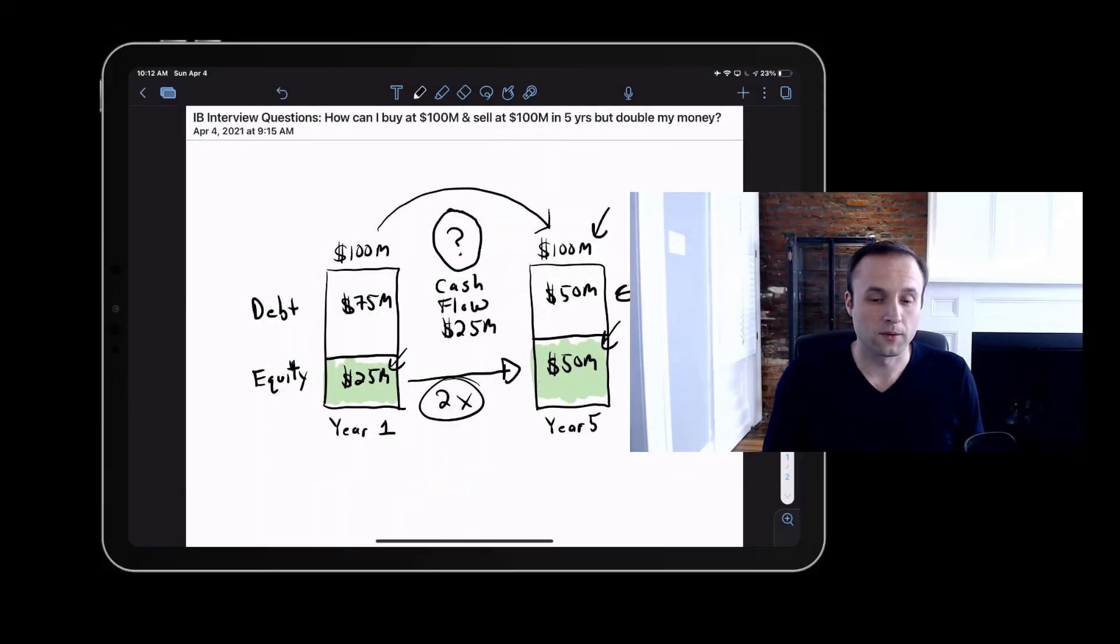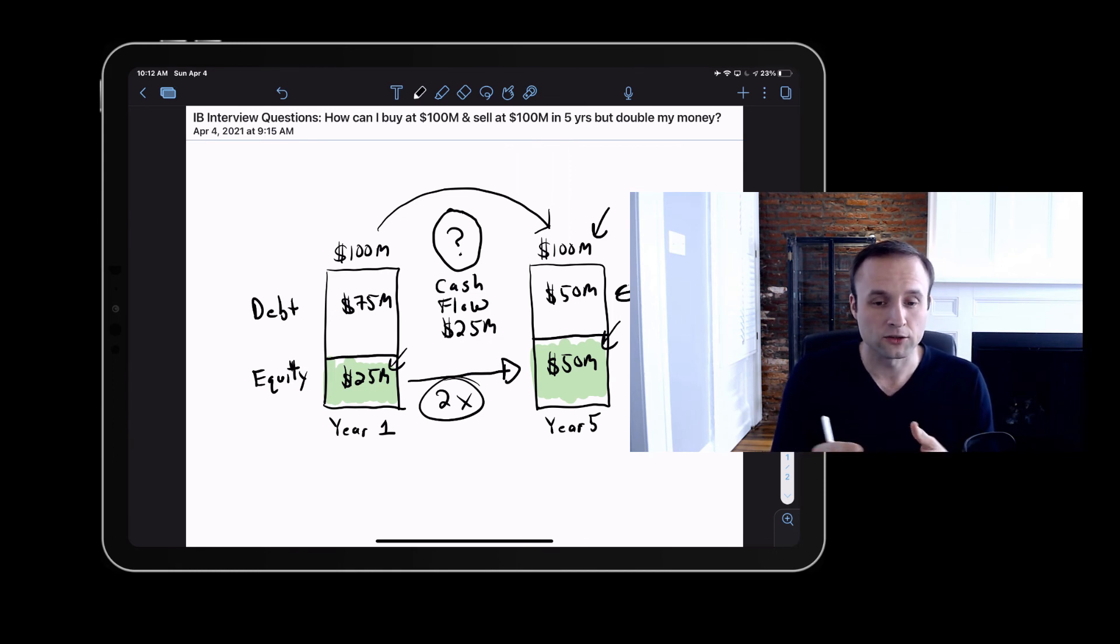So this is the answer to the question. In short, if we use debt and we pay down the debt, we can generate a return for ourselves even if the value of the business doesn't grow. The reason this question is asked is it tests whether you understand the fundamental value drivers in an LBO. There's appreciation, which is the growth of the asset, which we don't have here. That's one of the first major drivers. But the second major driver is pay down of debt through cash flows of the business, and that's actually what's generating our entire return here.